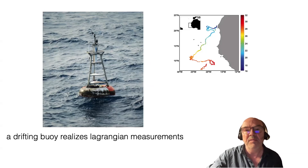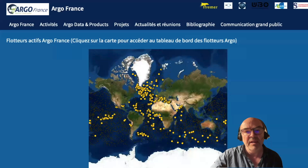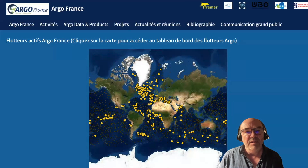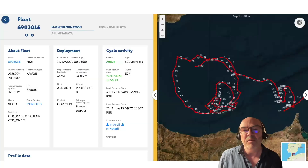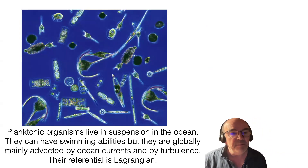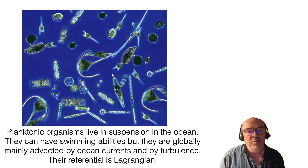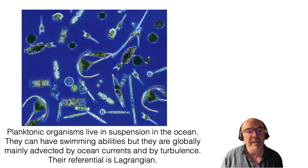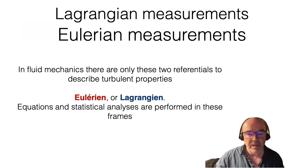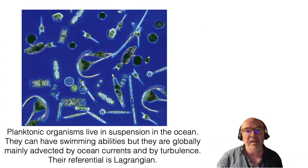You can see an example of a Lagrangian trajectory. There is a system called Argo — and locally Argo France — which you can view online, where you can follow the Lagrangian trajectories of many buoys. Also, planktonic organisms that live in suspension in the ocean belong to the Lagrangian system. They have swimming abilities, but globally they are mainly advected by currents, so they see the world in a Lagrangian way.